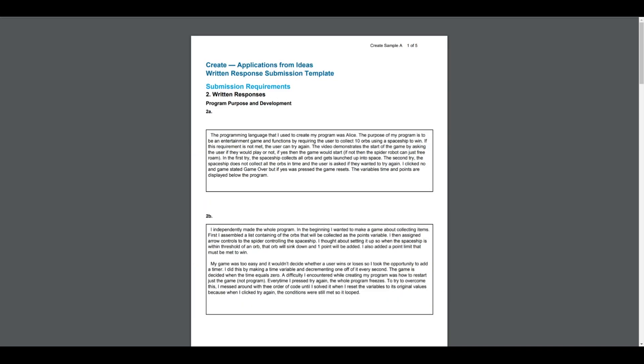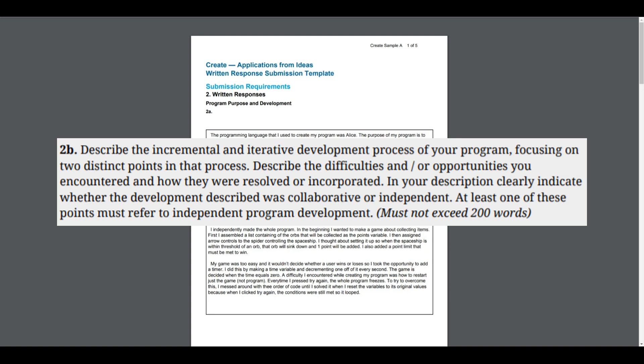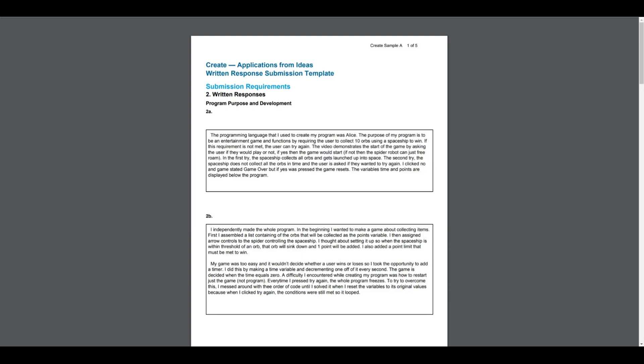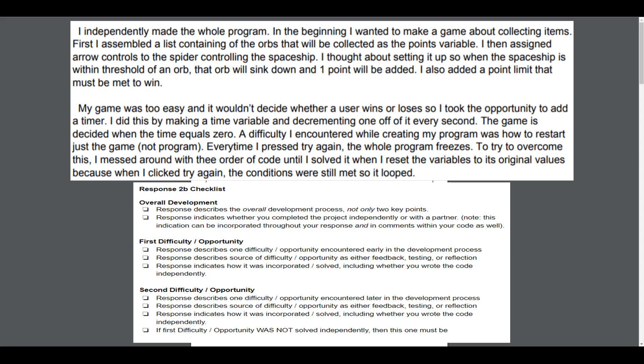Let's look at 2B. The rubric says: describe the incremental and iterative development process of your program, focusing on two distinct points in that process. Describe the difficulties and/or opportunities you encountered and how they were resolved or incorporated. In your description, clearly indicate whether the development described was collaborative or independent — at least one of these points must refer to independent program development. There are three things we have to look for: the overall development, the first difficulty or opportunity, and the second difficulty or opportunity.